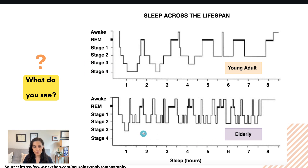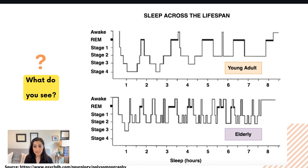On the bottom hypnogram, in the older adult, you see lots of awakenings and lots more sleep fragmentation. What you might hear from a patient is, 'I was awake all night, I didn't get any sleep.' The reason is that if they're having many awakenings, the brain is going to remember those awakenings but not necessarily the periods of sleep. To the patient it feels like they didn't sleep at all, even though you can see they were getting some deep sleep and REM across the night.